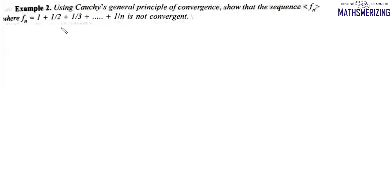The next question is: using Cauchy's general principle of convergence, show that the sequence {fn} is not convergent, where fn is defined as 1 plus 1/2 plus 1/3 up to 1/n.